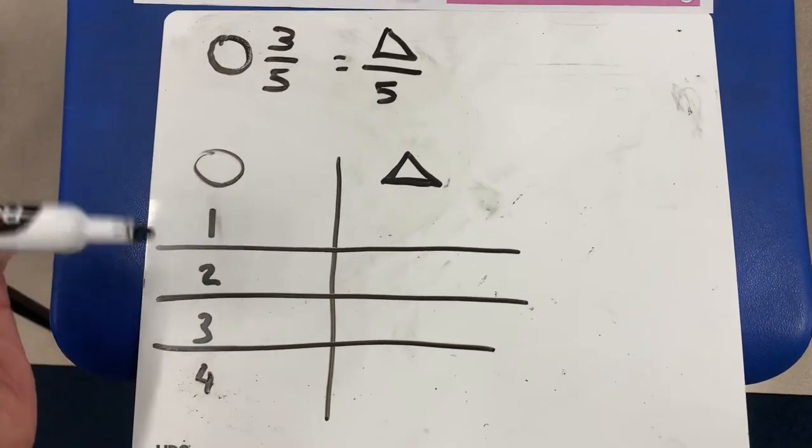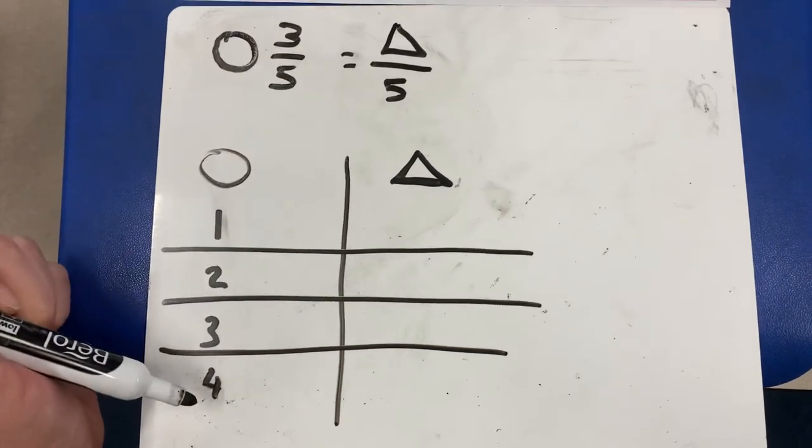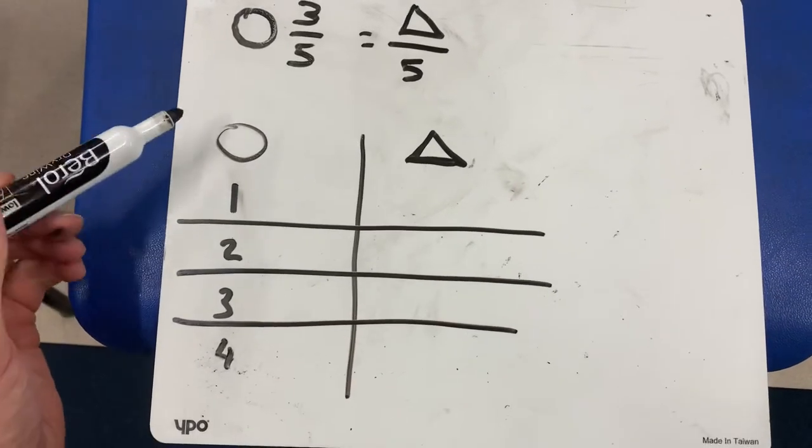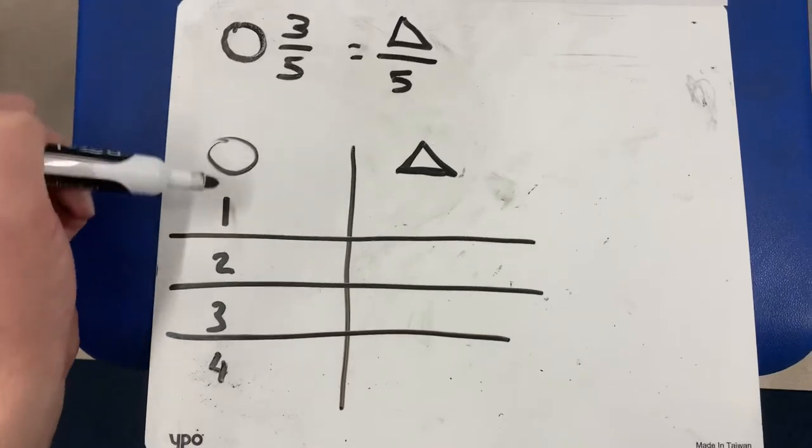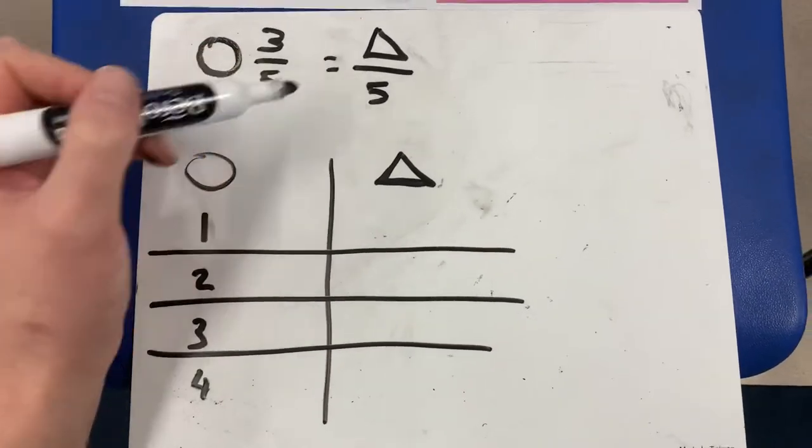You had a table that looks like this. I've only gone to number four, but these are the values for circle. So if the value of circle is one, what's that equal to in fifths?